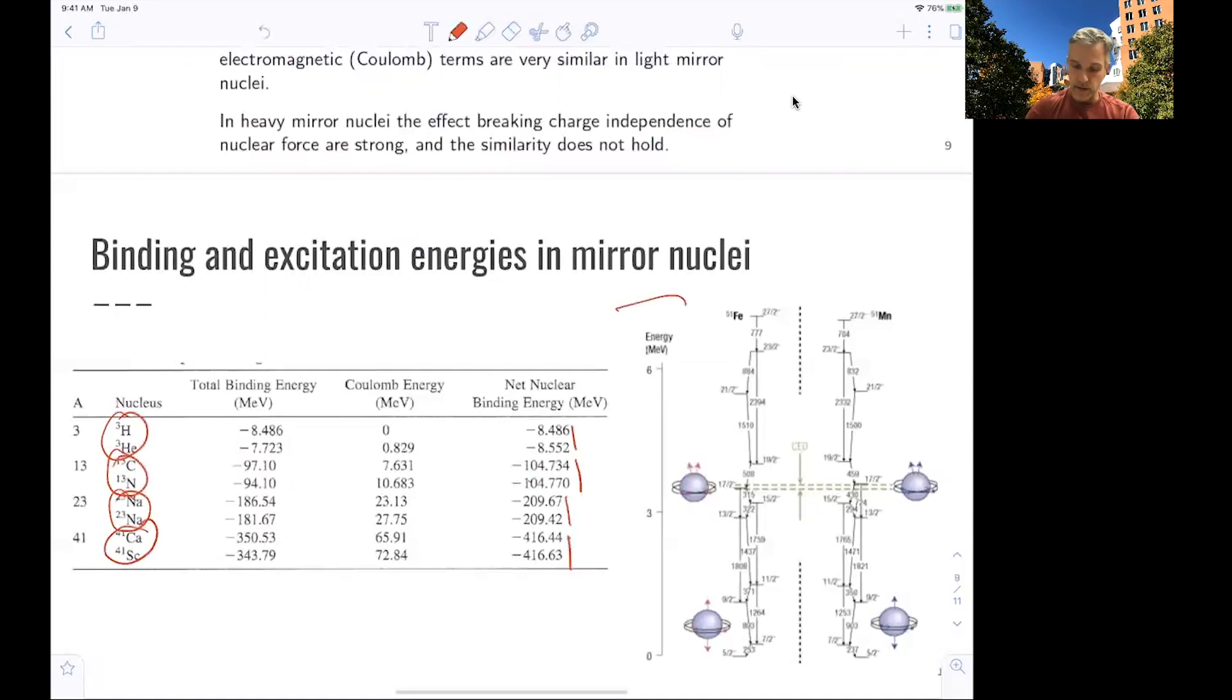And this table here, or this diagram, shows you excitation energies for two mirrored nuclei. And you see that the energy levels are pretty much on par. Without going into any detail, they're on par between those two mirrored nuclei.